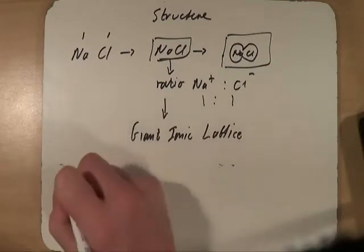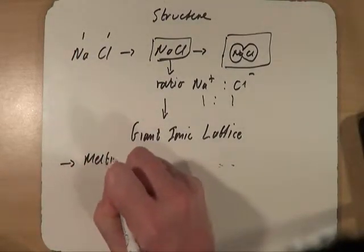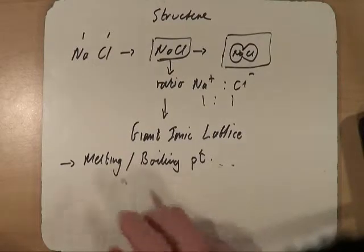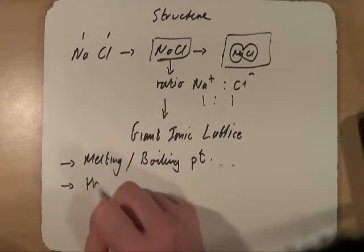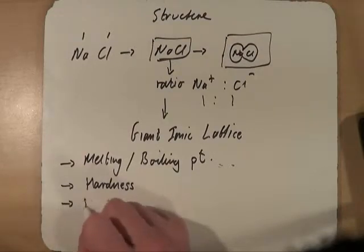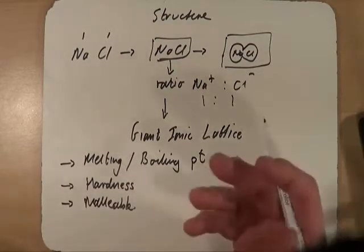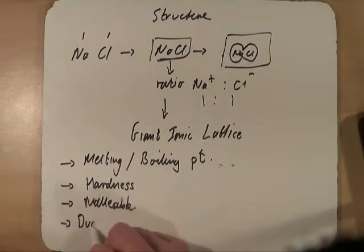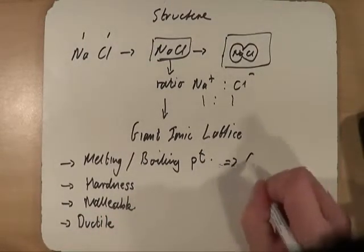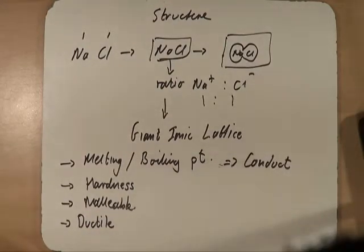And how can we use the fact that something is a giant ionic lattice to explain its properties? And when I talk about properties, what I'm talking about are its melting and boiling points, its hardness, is it brittle or soft, being malleable so can it be bent into shape, is it ductile, can it be drawn out into long thin wires, does it conduct heat or electricity.